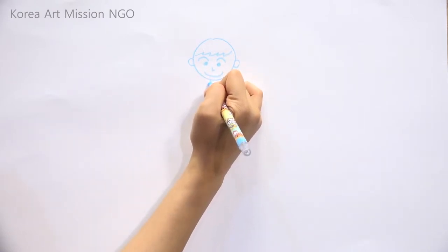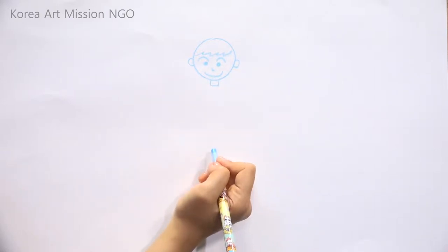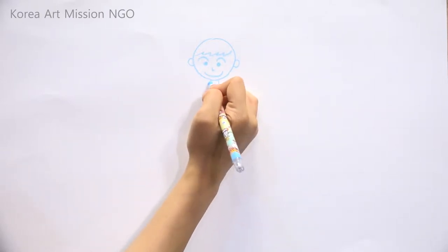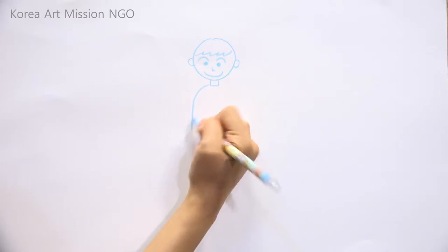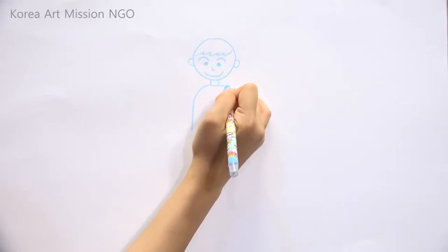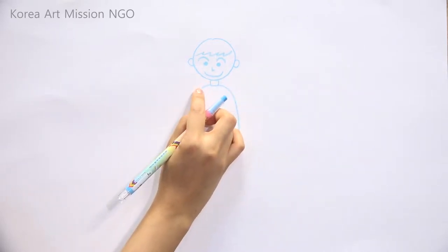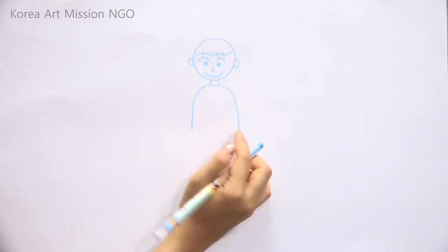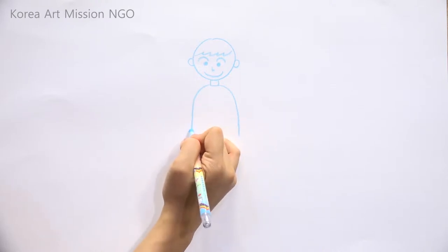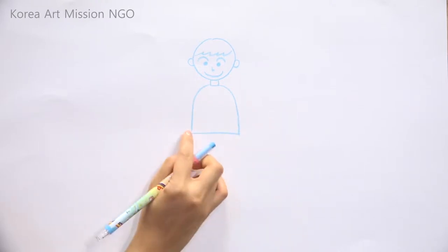Draw the neck and the body as rectangles like we did last time. Let's draw the shoulders dropping roundly and meeting at the sides.